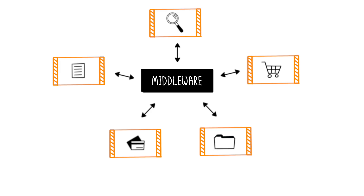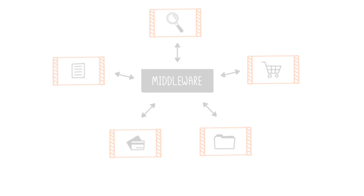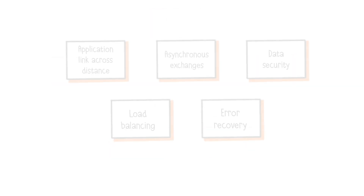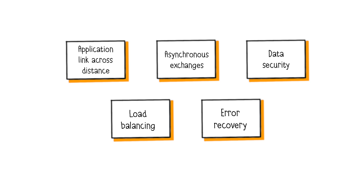But what does Middleware actually do? It connects applications across distances. Imagine you have servers in Paris, Tokyo, and New York. Middleware ensures data flows seamlessly between these sites, even though they are far apart.